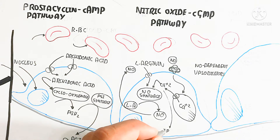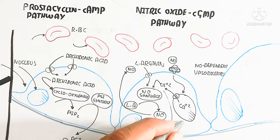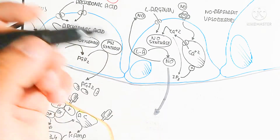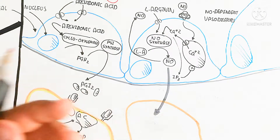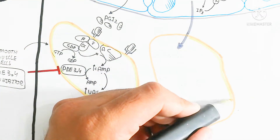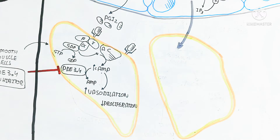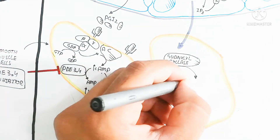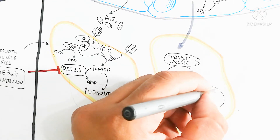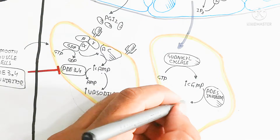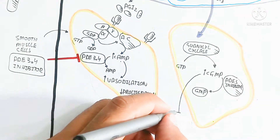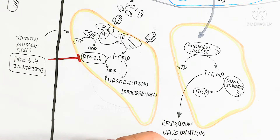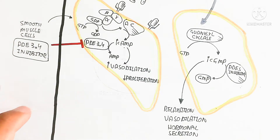IP3 also triggers the endoplasmic reticulum to release calcium. As calcium increases, vasodilation is stimulated via nitric oxide — not vasoconstriction — in the endothelial cell. Vasoconstriction is due to the smooth muscle cell. When nitric oxide enters the smooth muscle cell, guanylyl cyclase converts GTP into cyclic GMP. A PDE5 inhibitor can inhibit conversion of cyclic GMP to GMP, so cyclic GMP stimulates relaxation, vasodilation, and hormonal secretion.